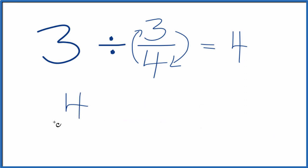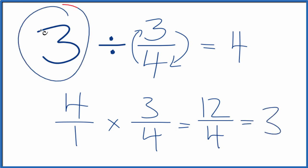So we take 4 and let's call it 4 over 1. Multiply it by 3 fourths. 4 times 3 is 12. 1 times 4 is 4. And 4 goes into 12 three times. So we have 3, which is what we started with.